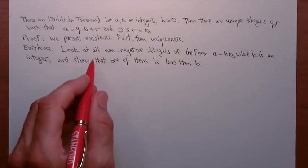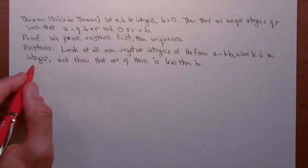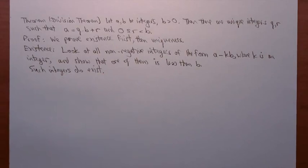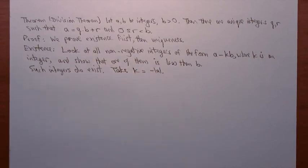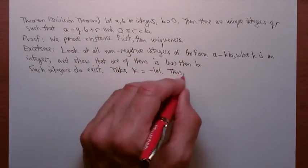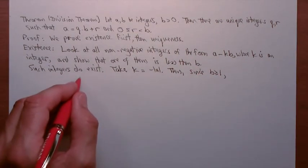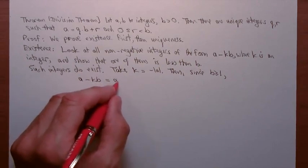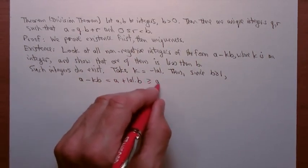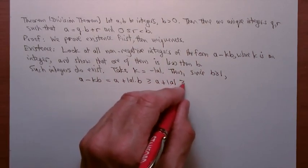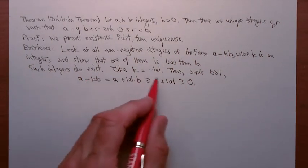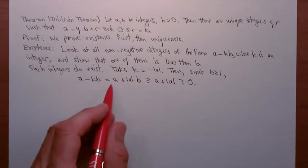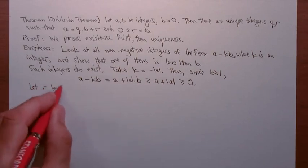So I'm going to look at all possible candidates for A minus KB, or A minus QB, if you like, and I'm going to show that among those candidates, one of them satisfies that condition. And the K for which it satisfies that condition will be the Q that I'll take for the theorem. Well, first of all, I need to show that there are such integers. For example, take K equals negative absolute value of A. Then, since B is greater than or equal to 1, A minus KB equals A plus absolute value of A times B, which is greater than or equal to A plus absolute value of A, which in turn is greater than or equal to 0.